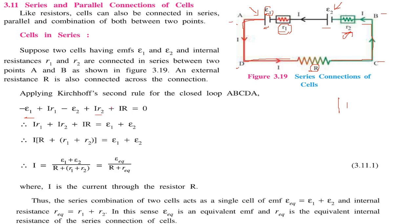There will be a voltage rise, not a drop. As we are moving in the opposite direction of I, we get I into R again. This whole expression equals zero in a closed loop, since the potential difference between the same point taken around a loop is zero. Taking E1 and E2 on one side and taking I common, we get I equal to (E1 plus E2) divided by (R plus r1 plus R2). Here, E1 plus E2 is the equivalent EMF and R1 plus R2 is the equivalent internal resistance, and I is the current passing through the resistance.